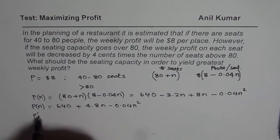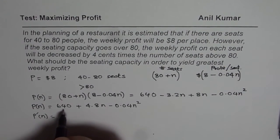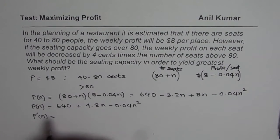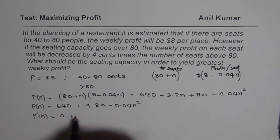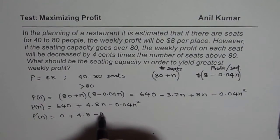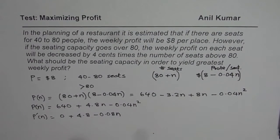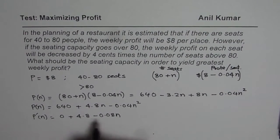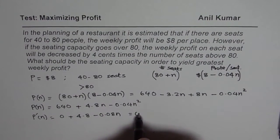Now rate of change of profit is, rate of change of 640 is 0, so constant. Plus 4.8 and here we have minus 2 times, that means 0.08 N. To maximize, that should be equated to 0.